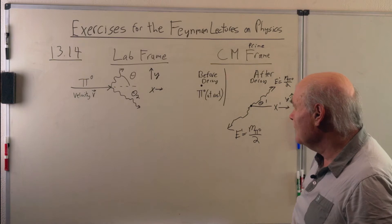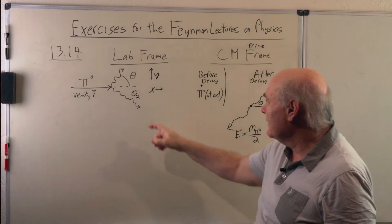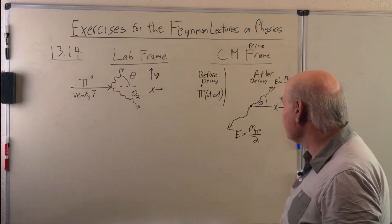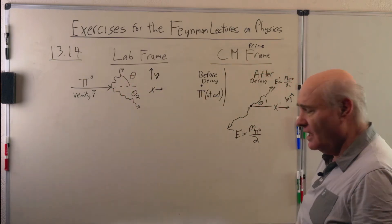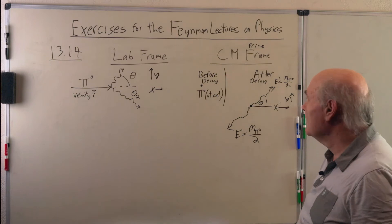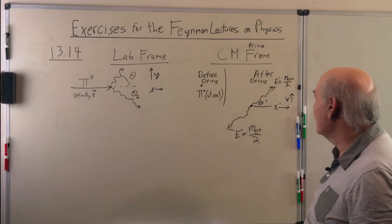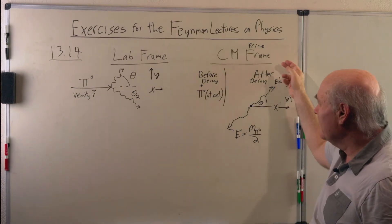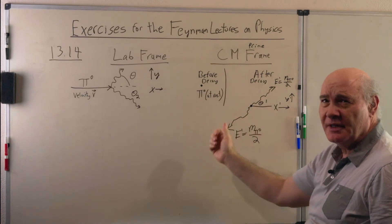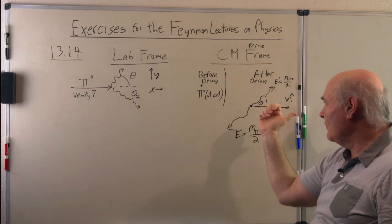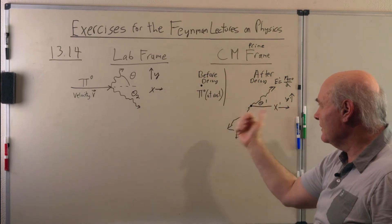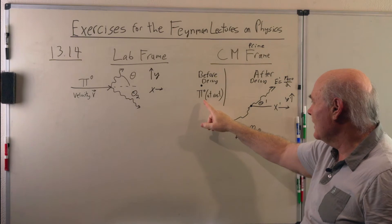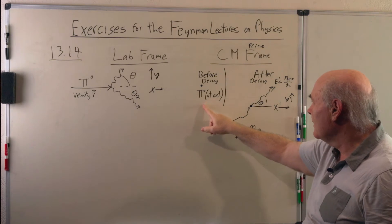The problem wants you to calculate the energy as a function of the angle. Now, to analyze this, we'll look in the center of mass frame. The center of mass frame is moving this way at velocity v, which puts the neutral pi meson at rest.